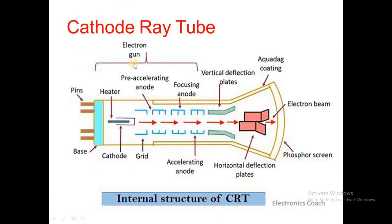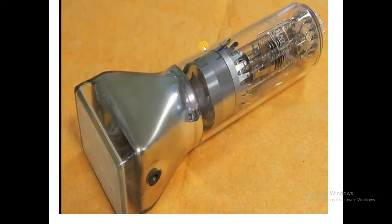When a phosphor-coated screen emits visible light when an electron beam strikes over it, that phenomenon is called fluorescence. The CRT also has a glass envelope and a base. Here is the internal structure of the CRT tube showing: electron gun, vertical deflection plates, aquadag coating, electron beam, and phosphorus screen. The internal components include heater, anode, cathode, and grid.